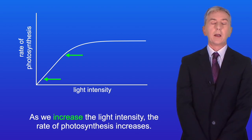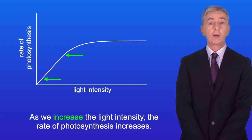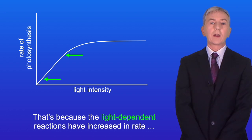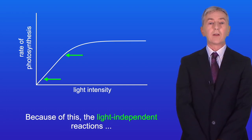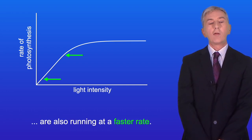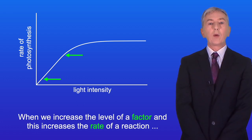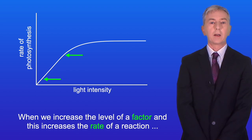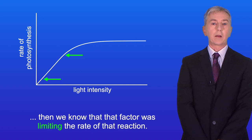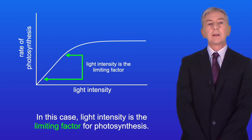As we increase the light intensity, the rate of photosynthesis increases, because the light-dependent reactions have increased in rate, producing more ATP and reduced NADP, and the light-independent reactions are also running at a faster rate. When increasing the level of a factor increases the rate of a reaction, that factor was limiting the rate. So in this case, light intensity is the limiting factor for photosynthesis.